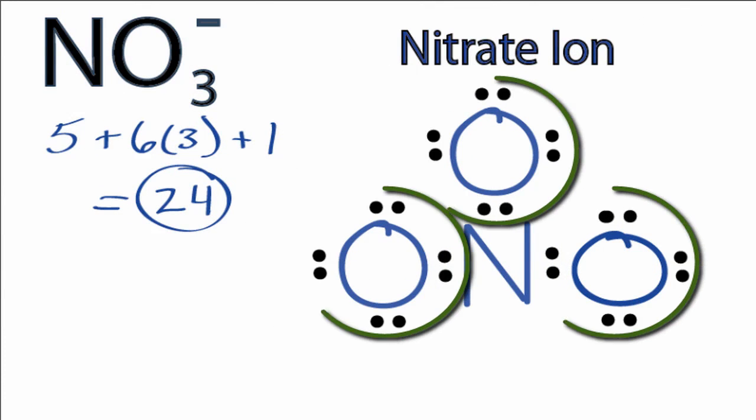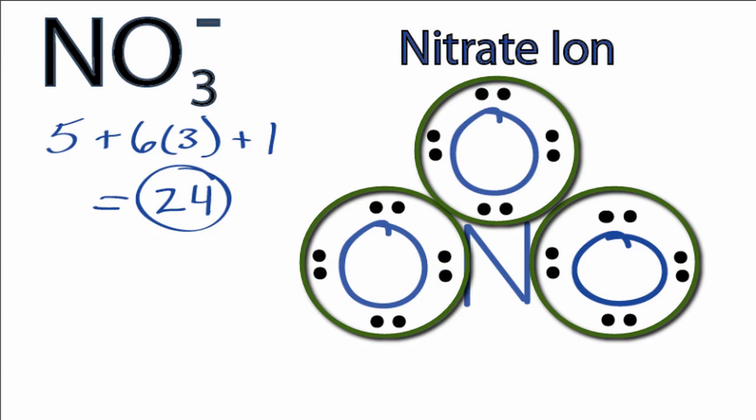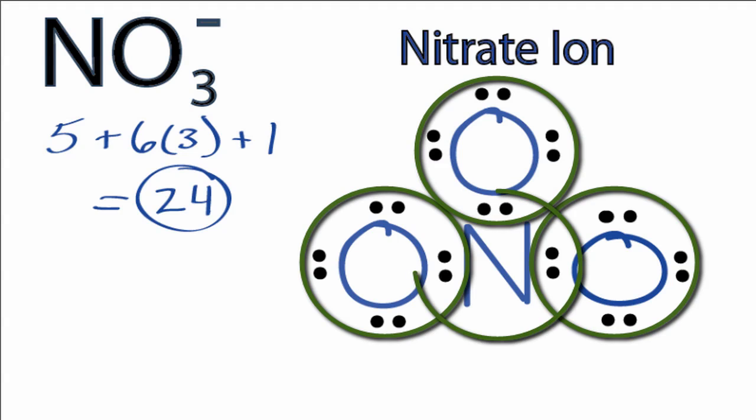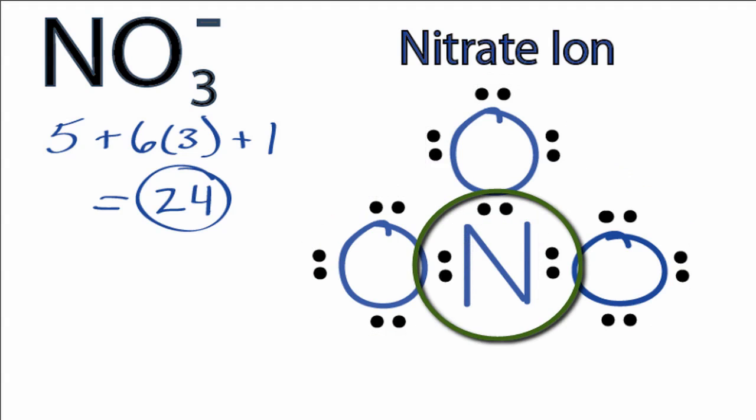We can see that each of the oxygens has eight valence electrons so their octets are full. However, the nitrogen in the center only has six valence electrons. To solve that problem, we can take and move these two valence electrons here between the nitrogen and oxygen to form a double bond.